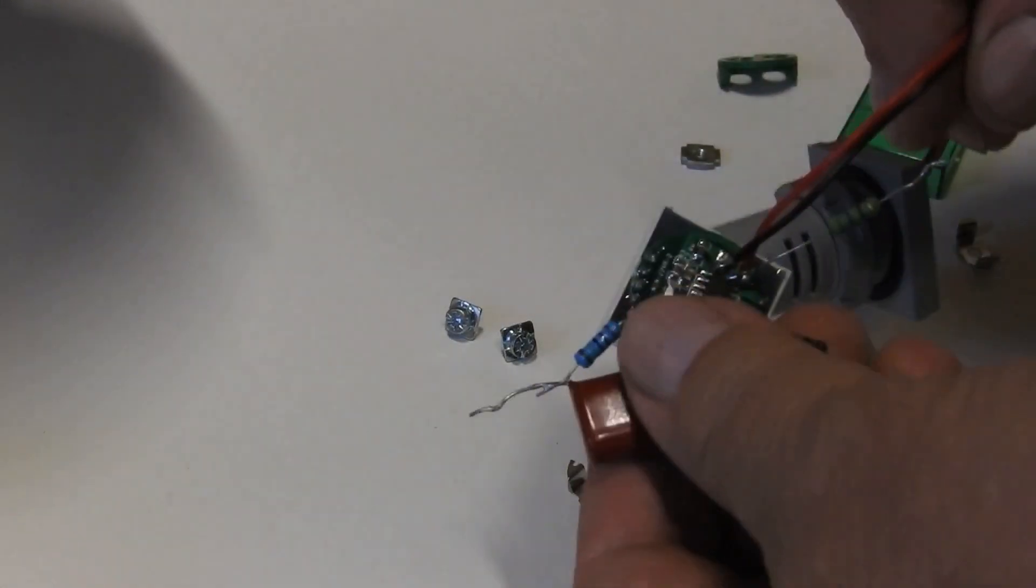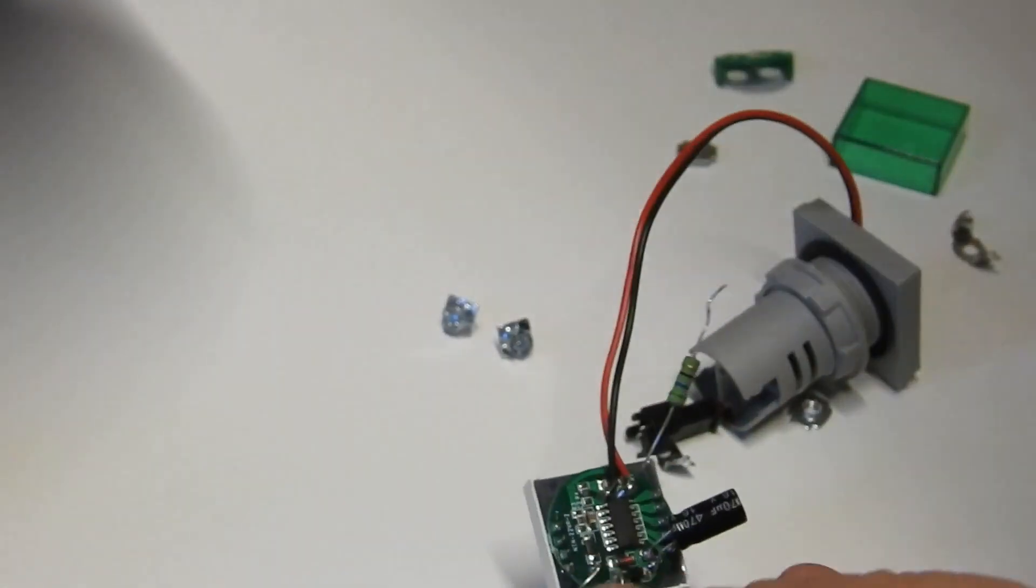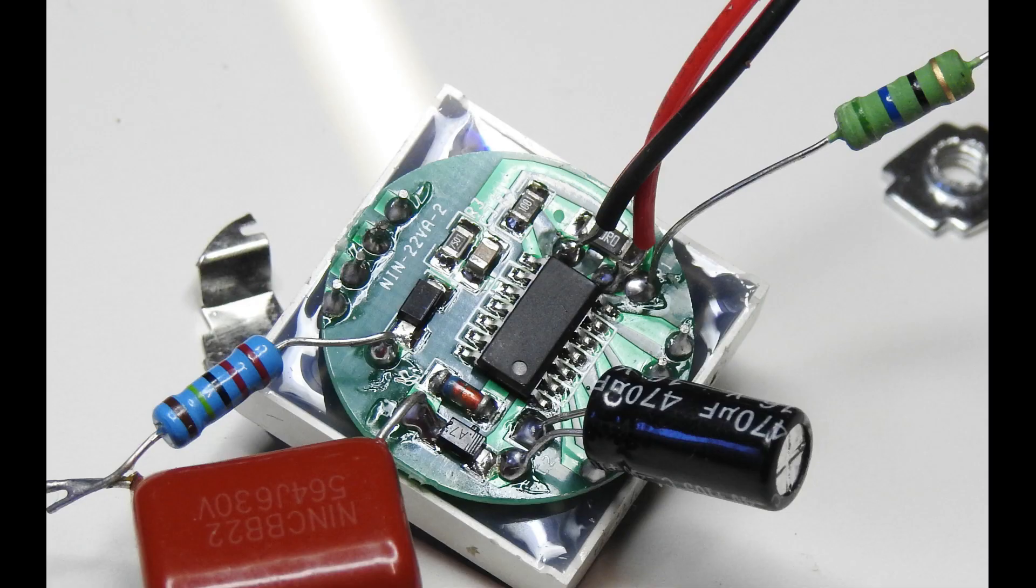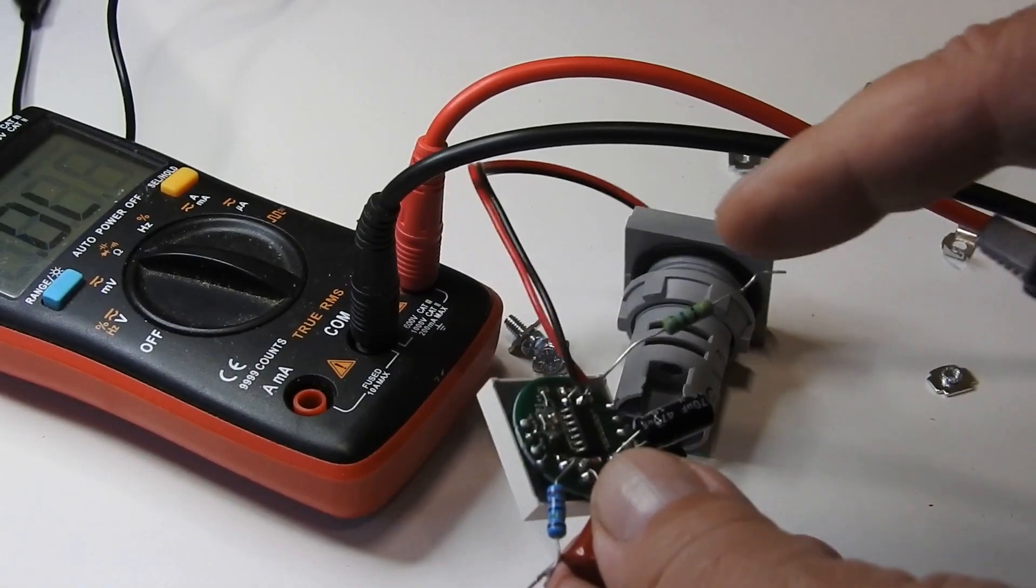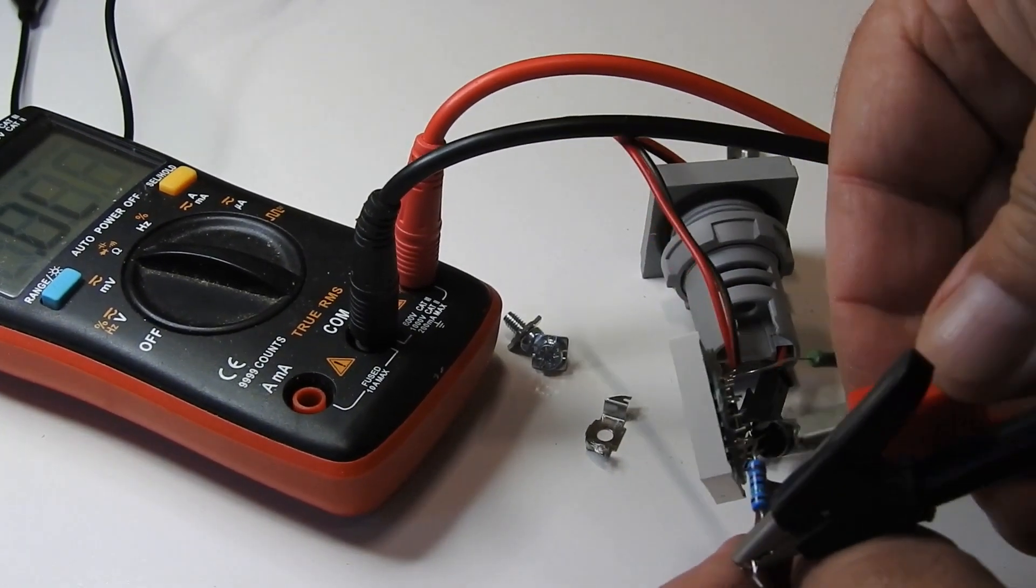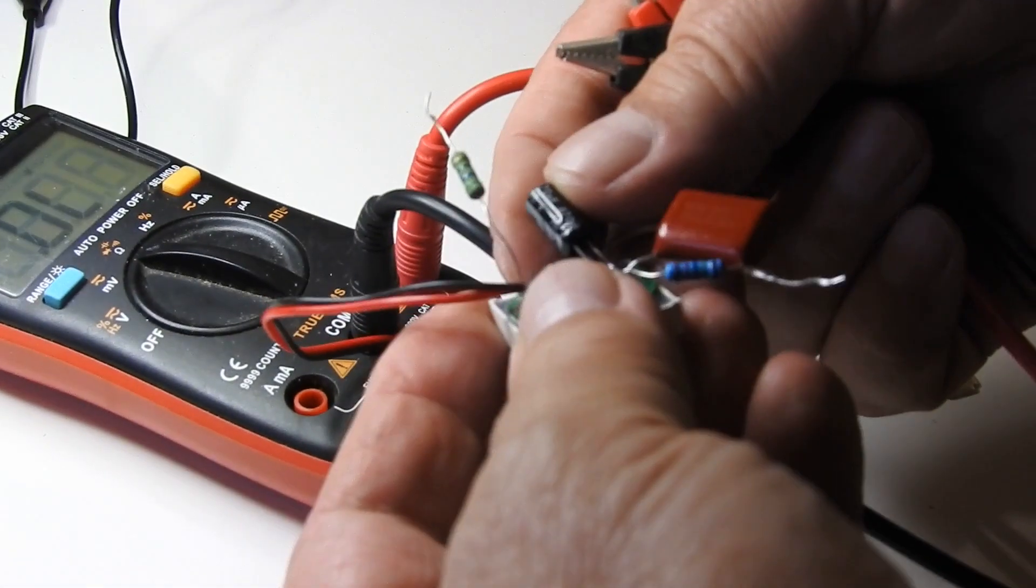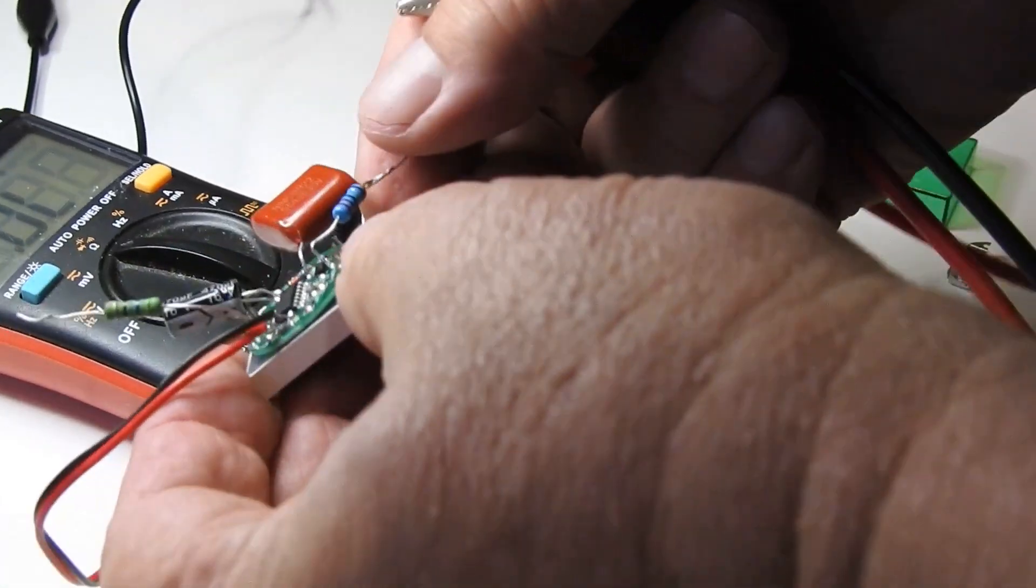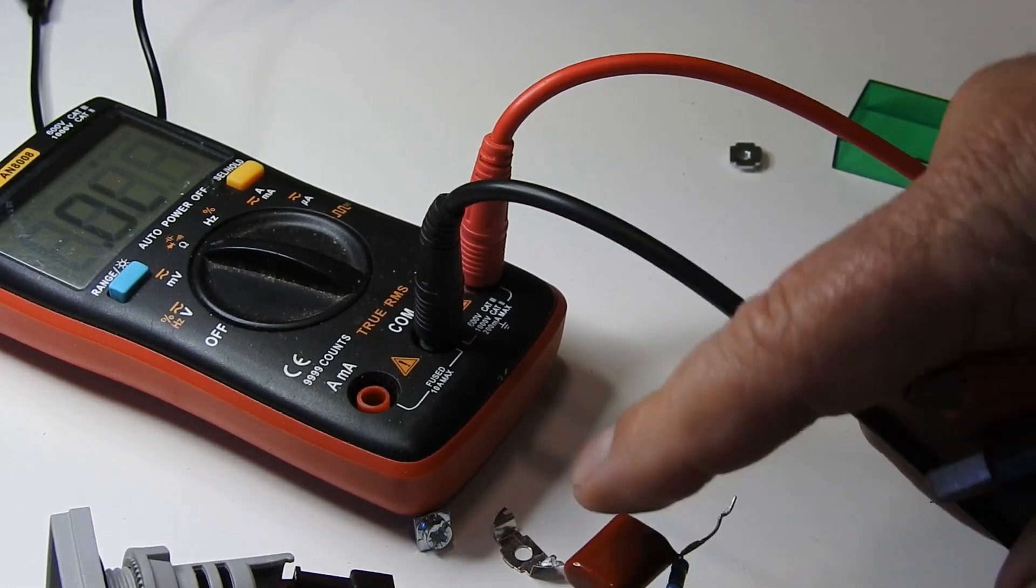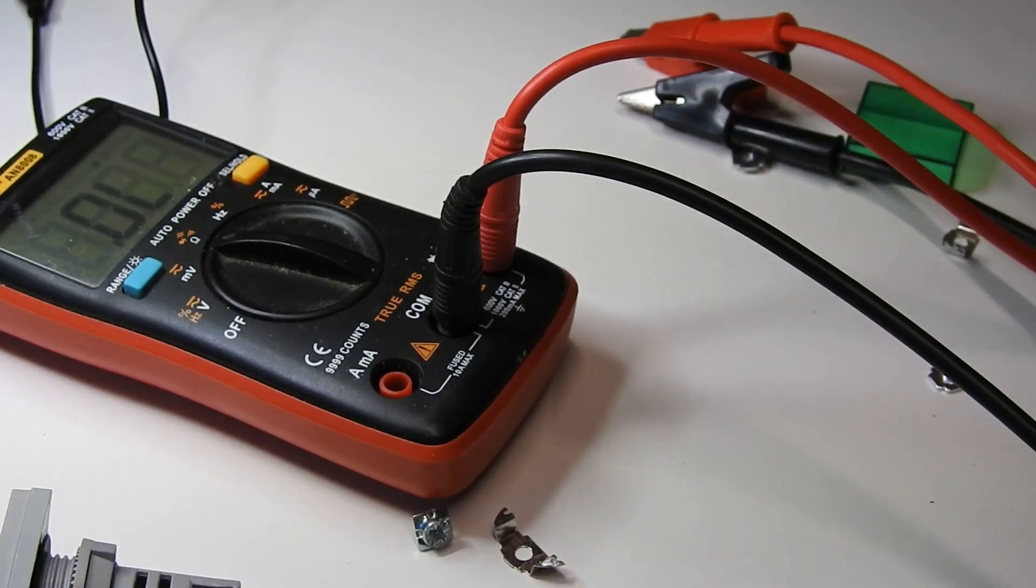So here's a close-up of the PCB. I cannot make out any markings on that main chip. And these two resistors here, this one here is 56 ohms and this one 2.2 meg. 470 microfarad 16 volt electrolytic and 560 nanofarad, 0.56 microfarad capacitor there.